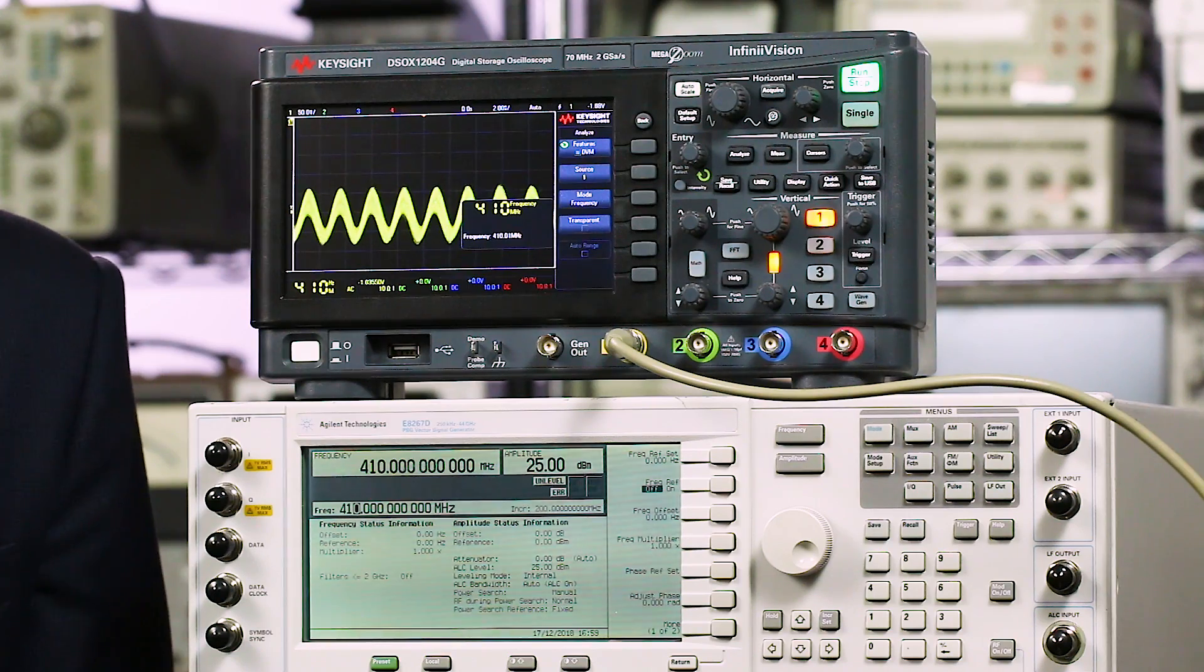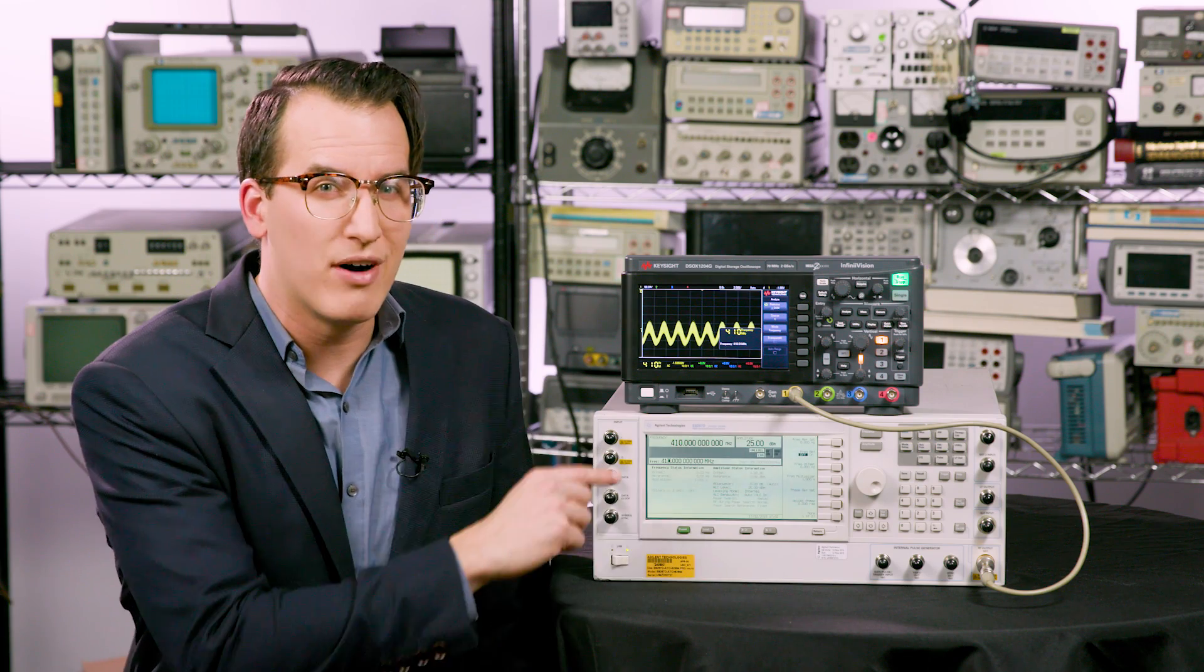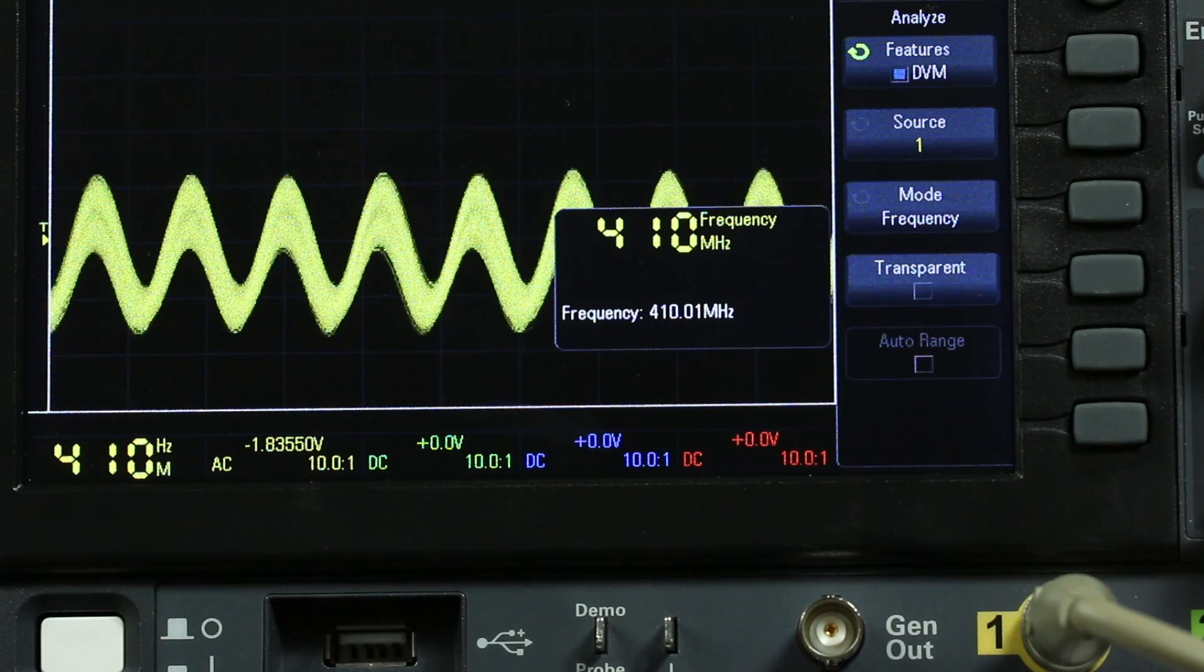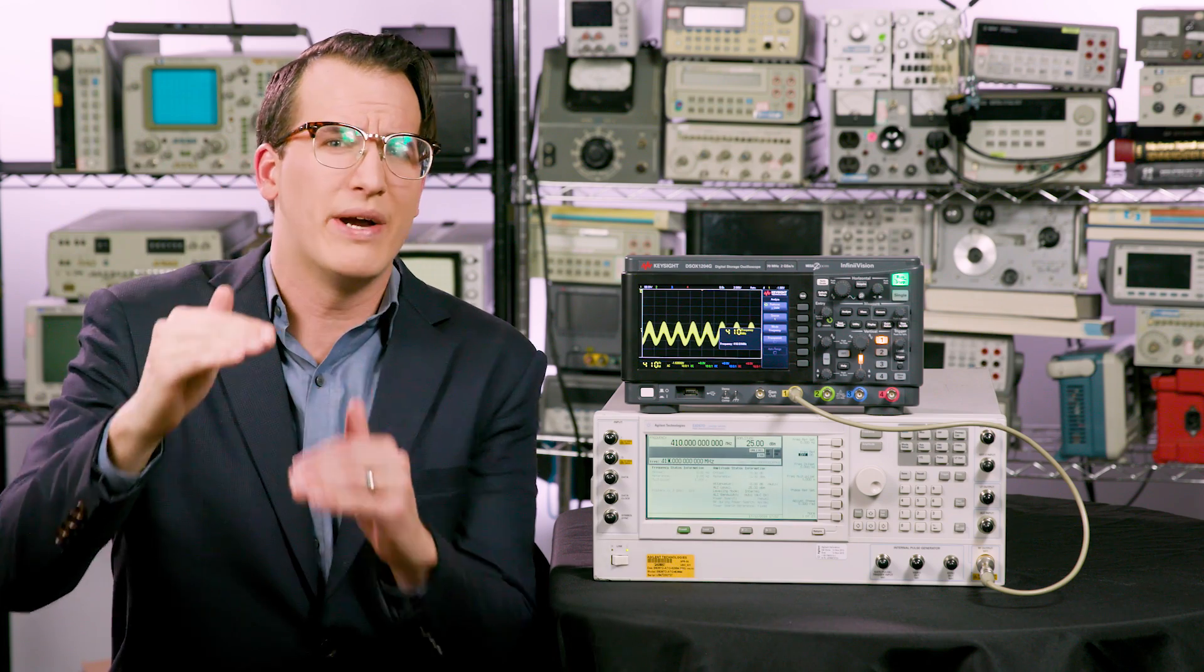It ain't pretty but it works. Quick side note, this is that same 11.2 volt signal going in and we are at 50 millivolts per division, so that 11.2 volt signal has been attenuated down to maybe 150 millivolts. I always love finding little gems like this in my test gear.